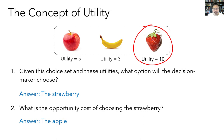Sometimes economists try to express utility in dollar terms — representing how much money someone is willing to give up in order to get something. The nice thing about representing utility in dollar terms is that it puts things in terms that everyone can understand.